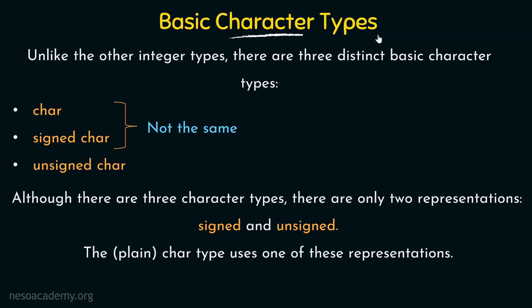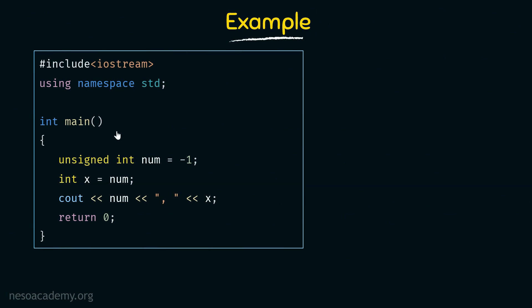Let's take an example program to understand the working of signed and unsigned types using an integer example. In this program inside the main function, I declared an unsigned integer named num and assigned the value minus one to it. Below that, I declared another variable x which is also of type integer — without specifying signed or unsigned, so it is signed by default. Into x I am assigning the value of num, which is minus one. Then I print the values of num and x separated by a comma. Pause and think about what the output will be.